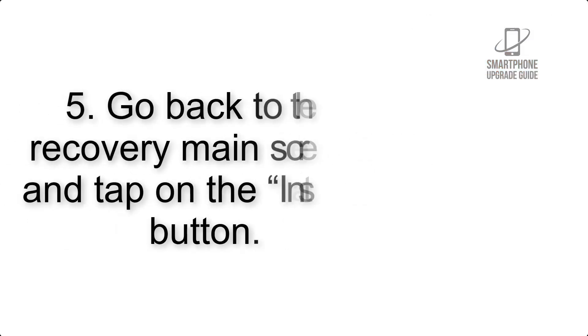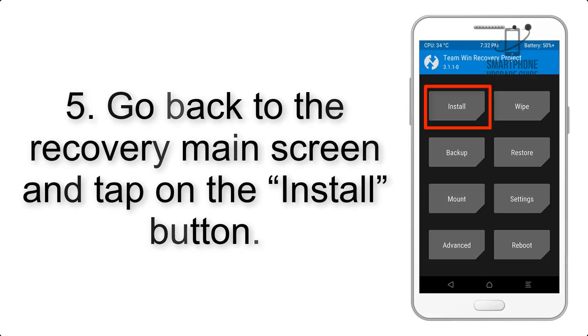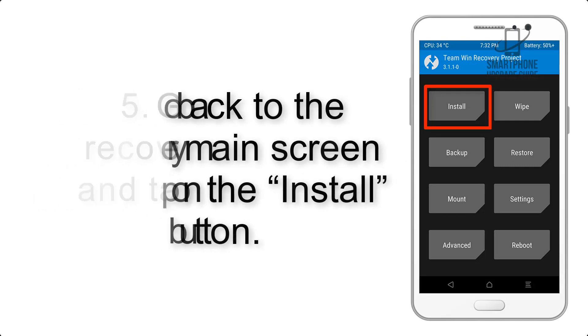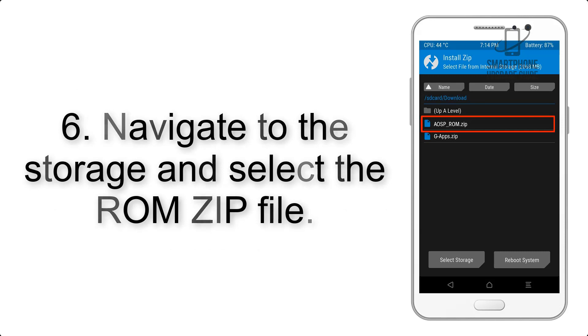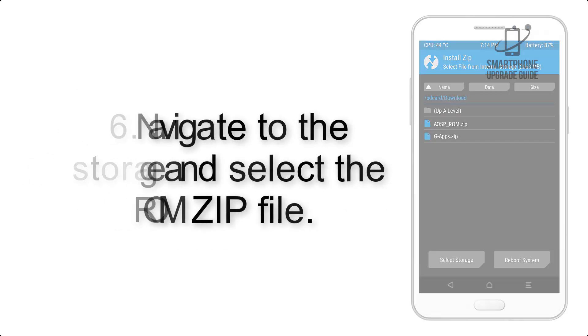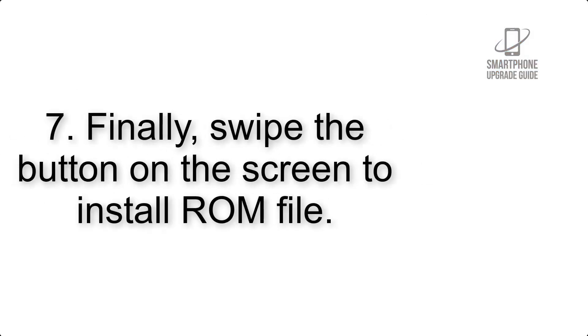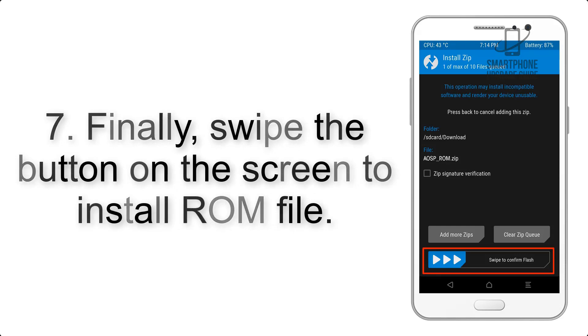Step 4: Swipe the button to wipe the device. Step 5: Go back to the recovery main screen and tap on the Install button. Step 6: Navigate to the storage and select the ROM zip file.